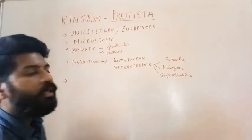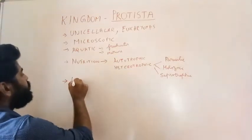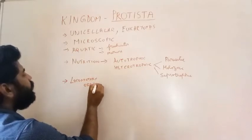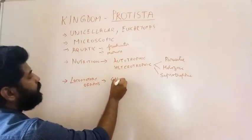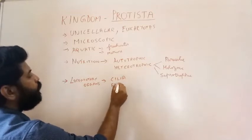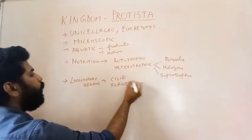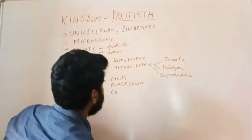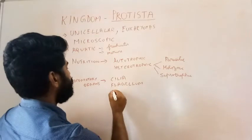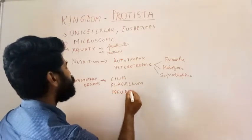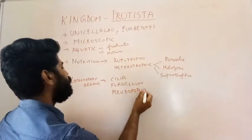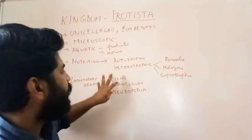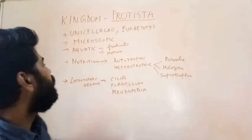In saprotrophic mode of nutrition these organisms directly obtain nutrients from dead and decomposing organic materials. Since these are present in water they need some kind of locomotory organs, so they have special locomotory organs. They may have cilia, flagellum, or in the case of amoeba, pseudopodia. These are used mostly for locomotion and sometimes for capturing food.